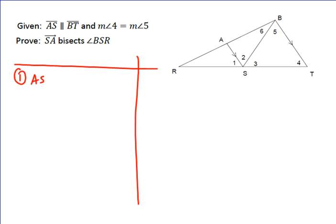And we begin by saying that line AS is parallel to line BT. And we're given that measure of angle four equals measure of angle five. And that is just given to us.